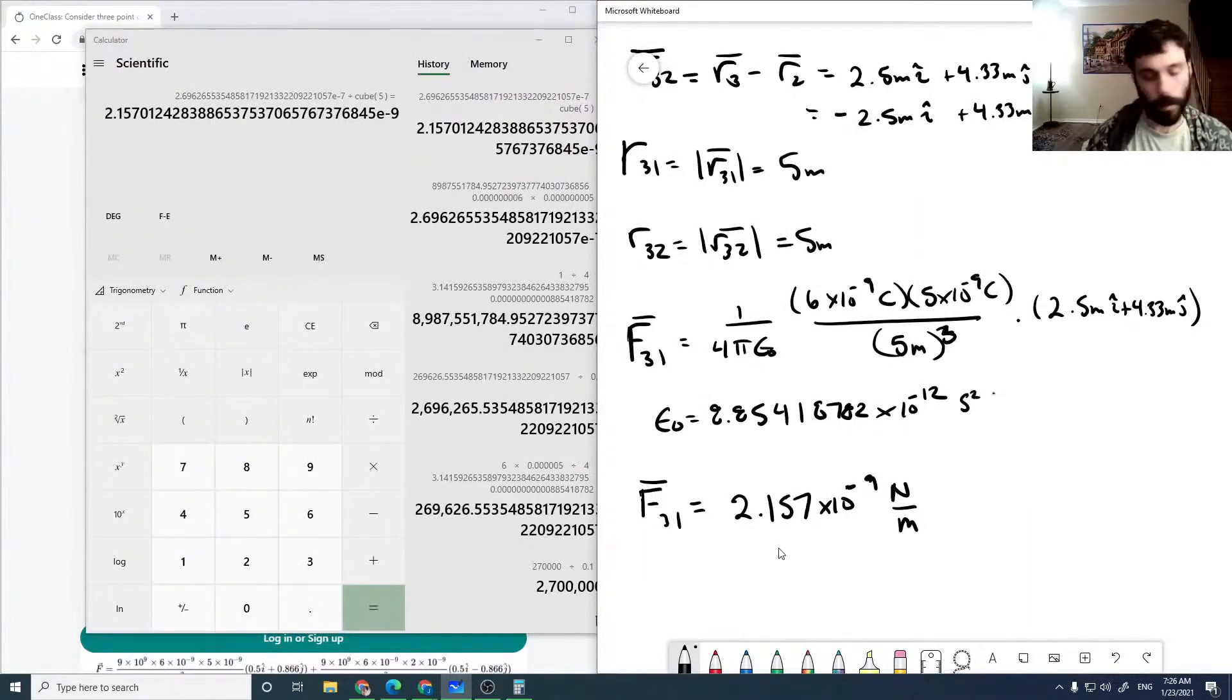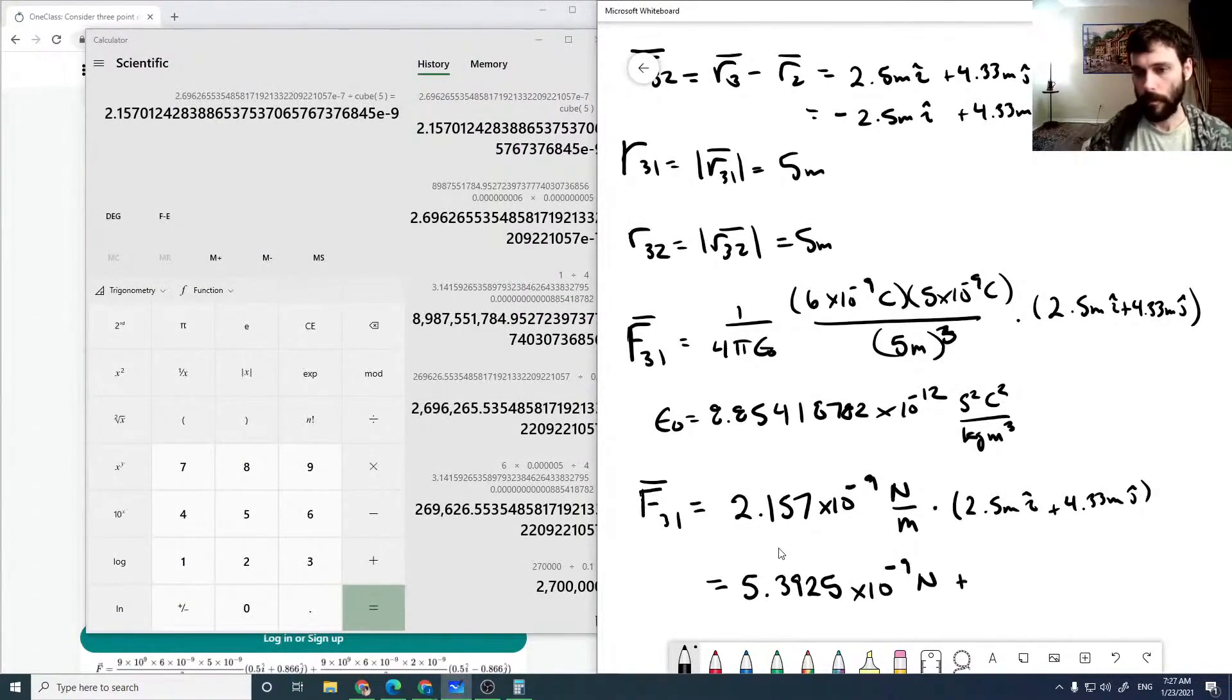This is second squared coulombs squared per kilogram meters cubed, multiplied by our 2.5 meters i hat plus 4.33 meters j hat. This comes out to be 5.3925 times 10 to the minus 9 newtons i hat plus 9.3399 times 10 to the minus 9 newtons j hat.